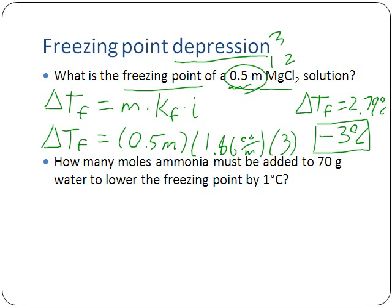A quick note on significant figures: our 0.5 has one sig fig. The 1.86 is a constant with infinite significant figures. The Van't Hoff factor is a whole number - you can't have something break into two and a half pieces - so it's a counting number with infinite significant figures. The only thing affecting our temperature calculation is the initial molality. So our answer is −3 degrees Celsius as the freezing point of our 0.5 molal magnesium chloride solution.